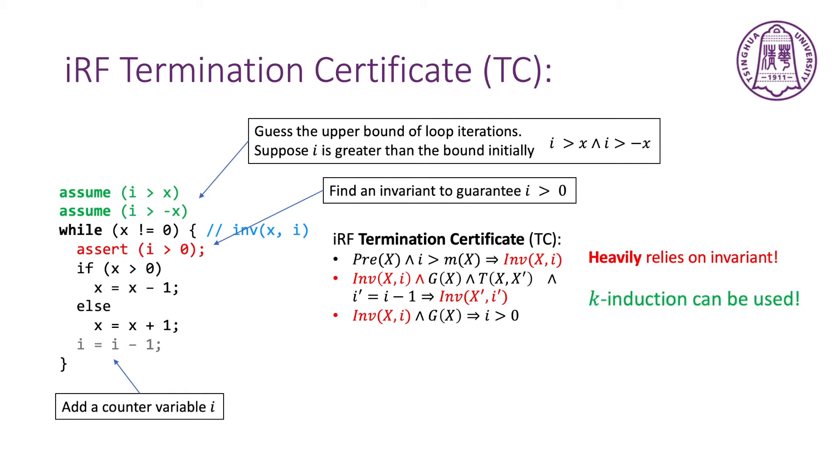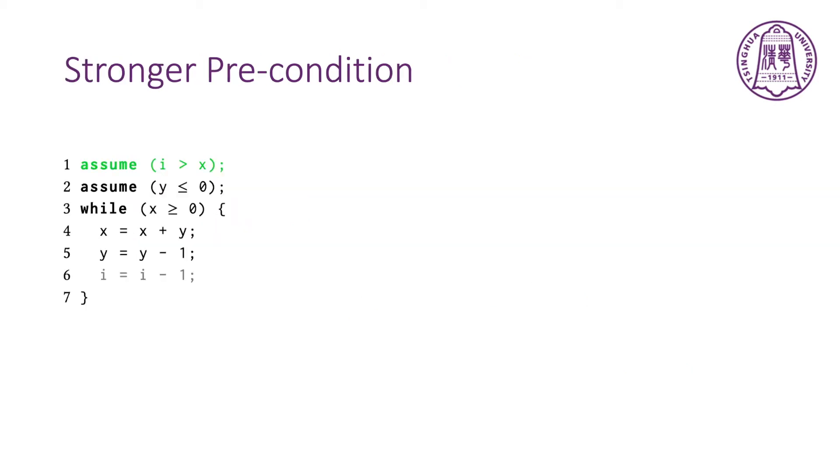So, we can use K-induction to enhance this approach. K-induction provides strong preconditions and requires weaker support invariants, which makes this approach more powerful. For example, the precondition of this loop implies the invariant, y is less than or equal to 0, which is too weak to ensure the validity of the TC.